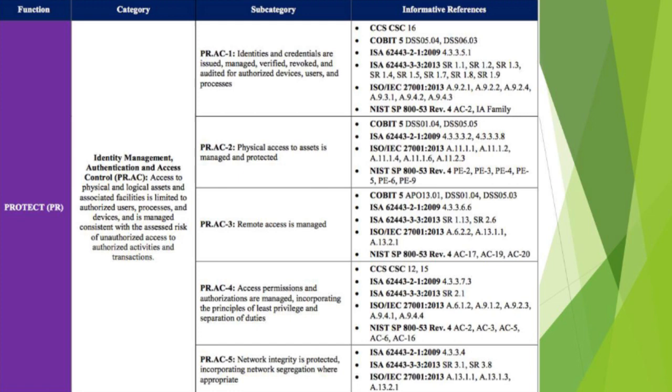Moving into Protect, inside identity management we should know what our user accounts are, who has access to data, and how we protect those. Do we have passwords? Do we store them in the clear? Hopefully we encrypt them, use strong encryption, and use salts. What access do people have? I'm in information security — should I have access to the revenue department's, police department's, or parks department's information? I probably shouldn't because I don't do those jobs. Critical security control 16 and NIST 853 give us lots of information about this.